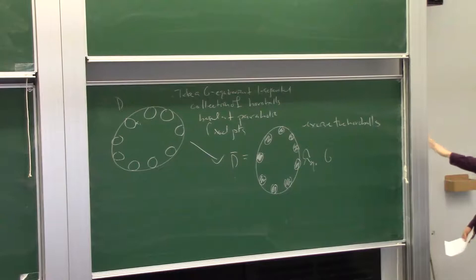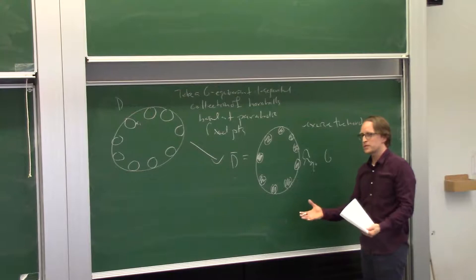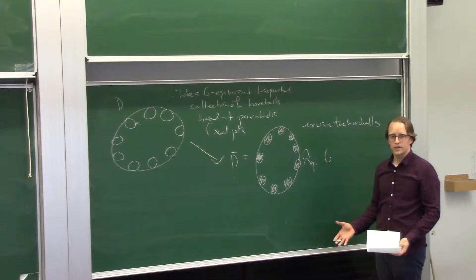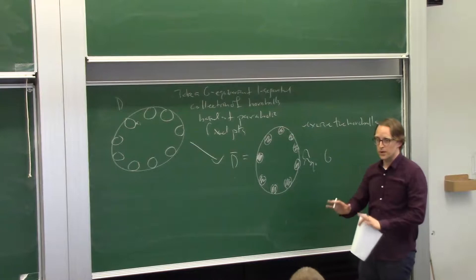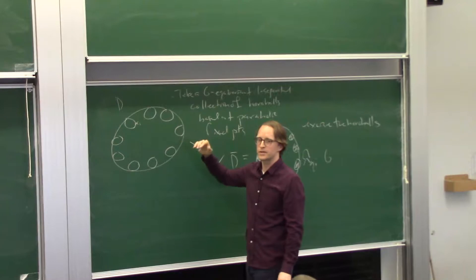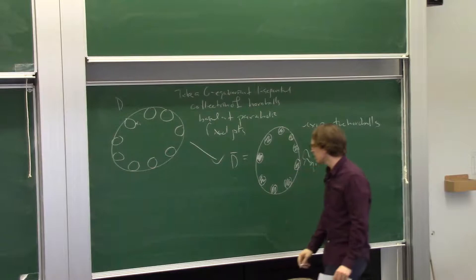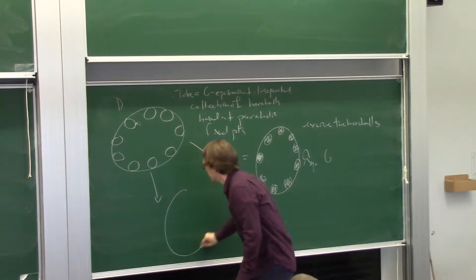If you're not familiar with what a relatively hyperbolic group is: it's a group with a finite collection of subgroups. You take an equivariant collection of cosets. One definition — my favorite — is you take a horoball and stick it on top of each coset of the subgroup, and that gives you some hyperbolic space. In this context we get H².